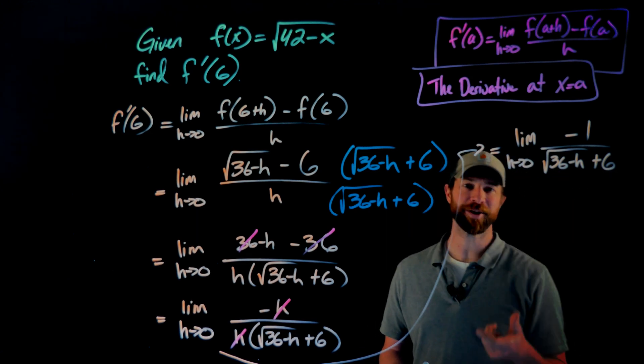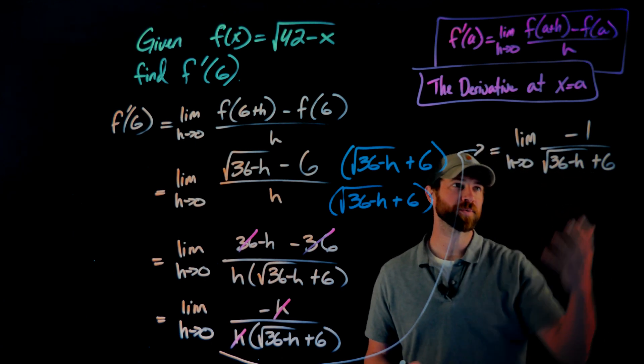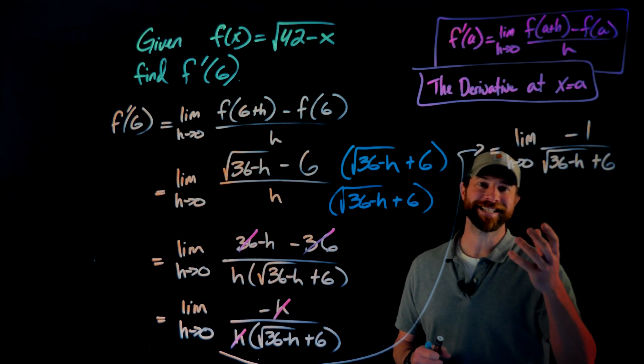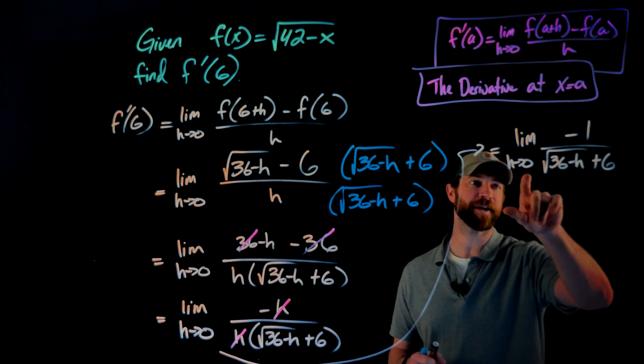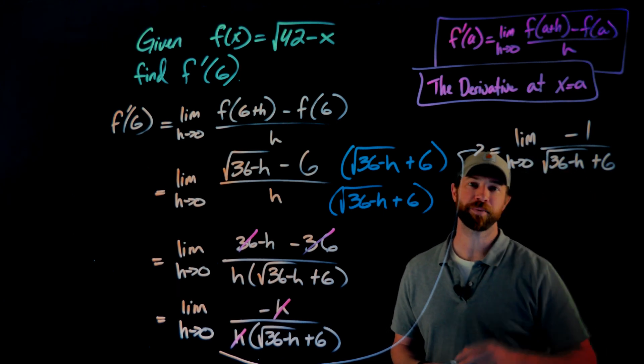This denominator now is not going to zero. And because this is a rational, radical combination function, it's continuous as long as that h value, that value I want to plug in, is within its domain, which it is because the denominator won't go to zero.